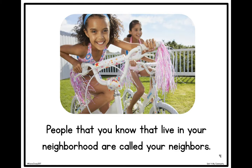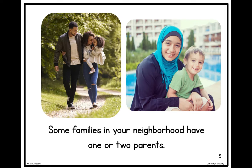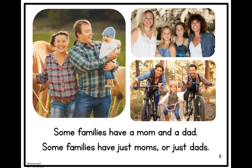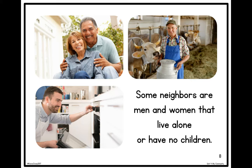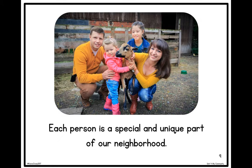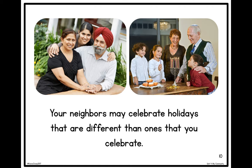There are many different kinds of families. People that you know that live in your neighborhood are called your neighbors. Some families have one or two parents — some have a mom and a dad, some just have moms or just dads. Some children's families are grandparents, aunts, or uncles. Some families are made of foster parents or close friends. Some neighbors are men and women that live alone or have no children.